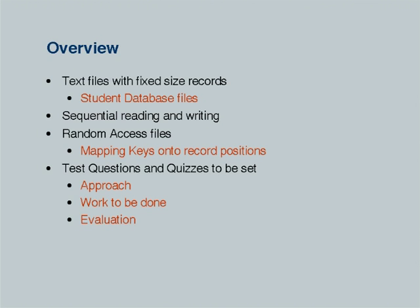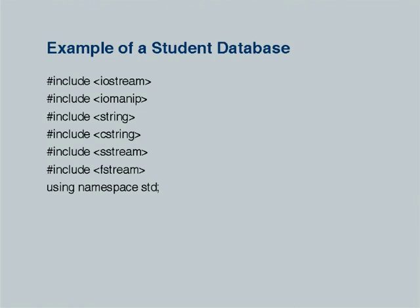We'll look at text files with fixed size records — the student database file we discussed last time — and the need for a fixed size record so that later we can provide random access to files and actually update individual records on disk. Today we'll just relook at sequential reading and writing. The random access files and mapping keys onto record positions we'll discuss on Saturday. I've also constructed one example: converting a two-digit number into words.